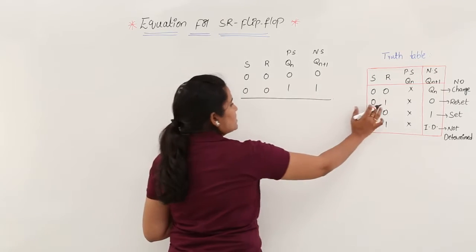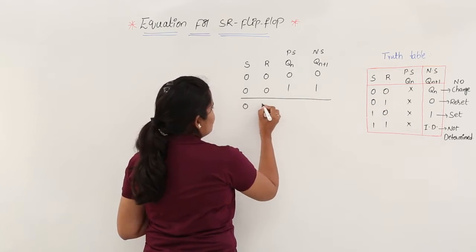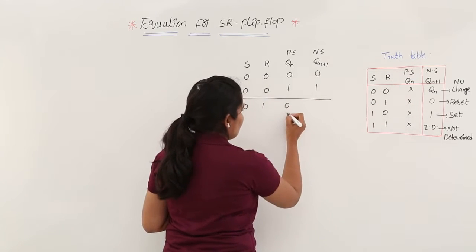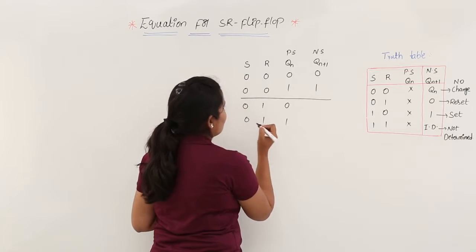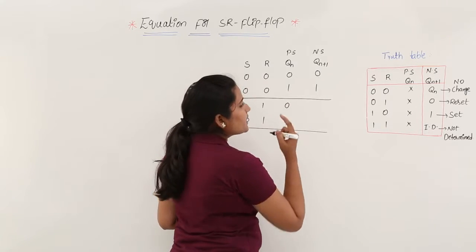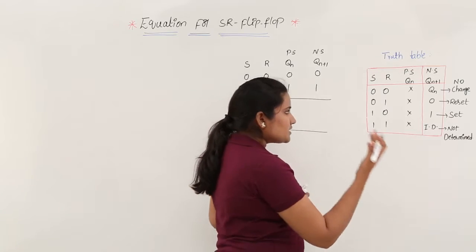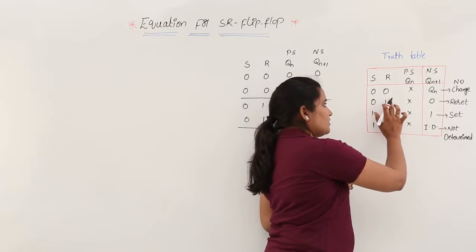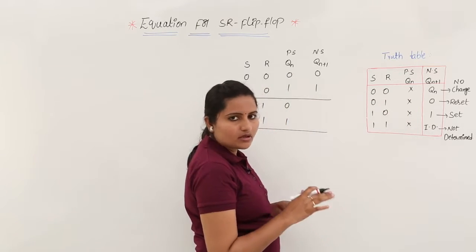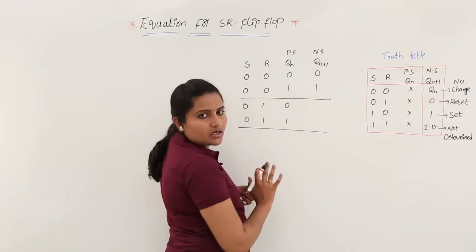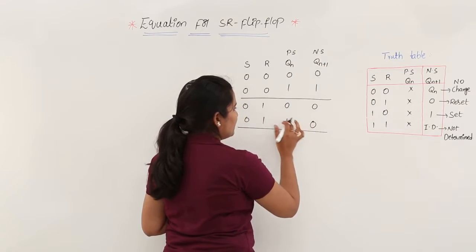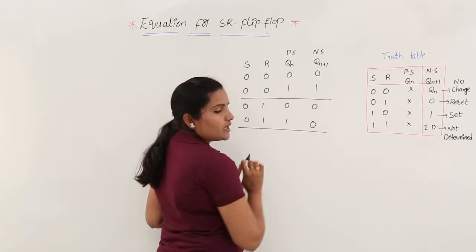For SR equal to 0,1, QN may be either 0 or 1. In the S=0, R=1 case, you are always getting QN+1 equal to 0. That means the next state is not dependent upon QN — you simply write 0 and 0 for both rows.